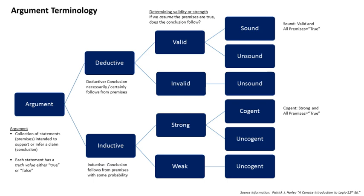The confirmation bias is based on the natural tendency to confirm rather than to deny a current hypothesis. Research has demonstrated that people are inclined to seek solutions to problems that are more consistent with known hypotheses rather than attempt to refute those hypotheses. Often, in experiments, subjects will ask questions that seek answers that fit established hypotheses, thus confirming these hypotheses. For example, if it is hypothesized that Sally is a sociable individual, subjects will naturally seek to confirm the premise by asking questions that would produce answers confirming that Sally is in fact a sociable individual.